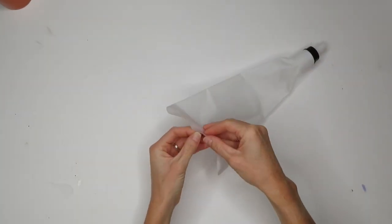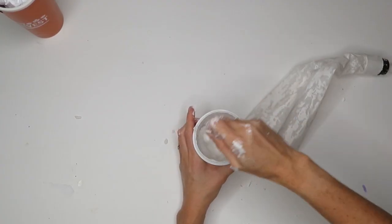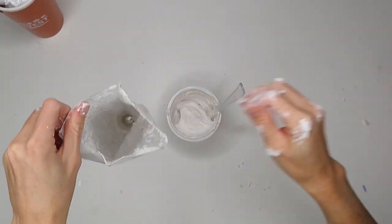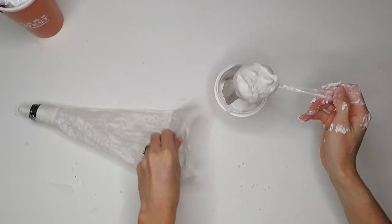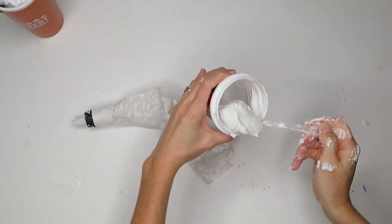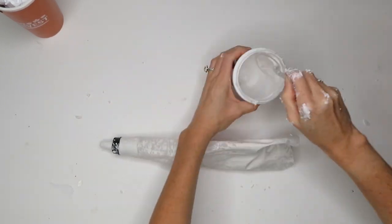I have to tell the truth here. I actually put the spackling in straight out of the package and it was way too thick. I could not get it to come out, so I ended up mixing in just a little bit over a tablespoon or maybe a little under a tablespoon of water. Just kind of judge it.